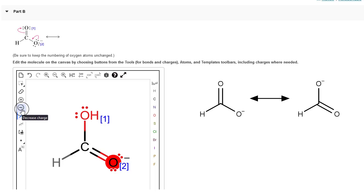So we're going to use the negative charge button, the decrease charge button here. So click that, click on the oxygen. That's going to replace that hydrogen with a lone pair of electrons, which is what we want.